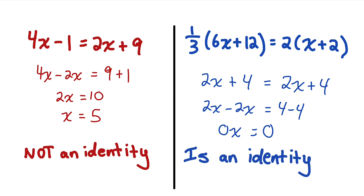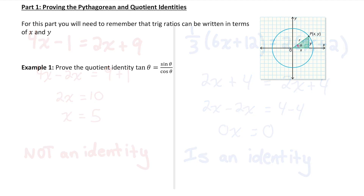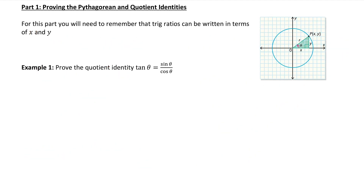Now that you understand the difference between what makes an equation an identity or not an identity, we can work in some trig functions into our equations and try to prove some trig identities. In order to start proving trig identities, you're going to have to remember that we can rewrite trig ratios in terms of x and y.